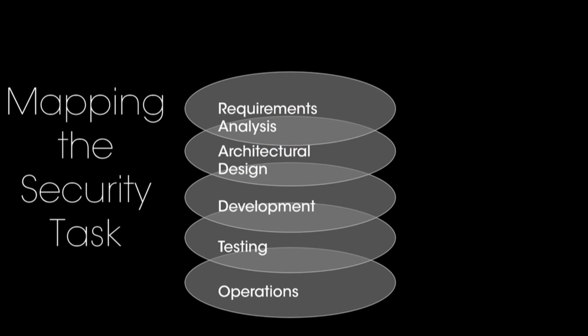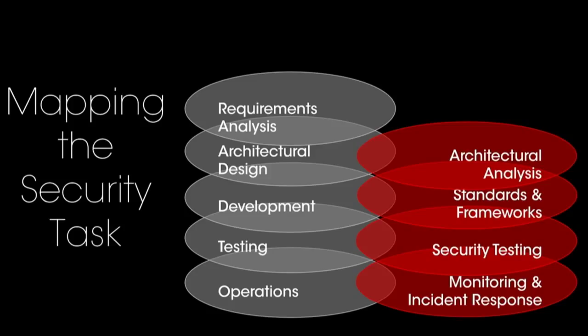This is your traditional security process — and if you're agile, it still works roughly the same way. You start with architectural analysis to figure out whether the architecture you've come up with to satisfy your requirements is going to work. Then you have standards and frameworks that drive how you're writing code — ideally getting all of your protocol parsing out of the hands of normal developers. You have security testing once you get to test. And once you're in operations, you have monitoring and incident response. That's basically what you're looking at.